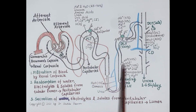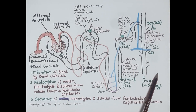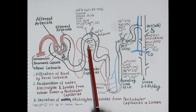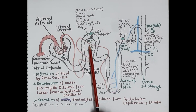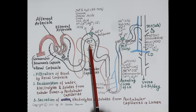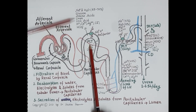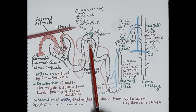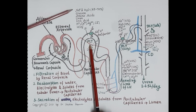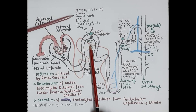Reabsorption and secretion occur in different parts of the renal tubule. In the proximal convoluted tubule, the majority of reabsorption takes place — substances are reabsorbed into the renal epithelial cells, move to the peritubular capillaries, and return to the circulation. About 65 to 70 percent of water, sodium, and potassium in the filtrate are reabsorbed here, and 100 percent of glucose, amino acids, and vitamins in the filtrate are reabsorbed in the proximal convoluted tubule.